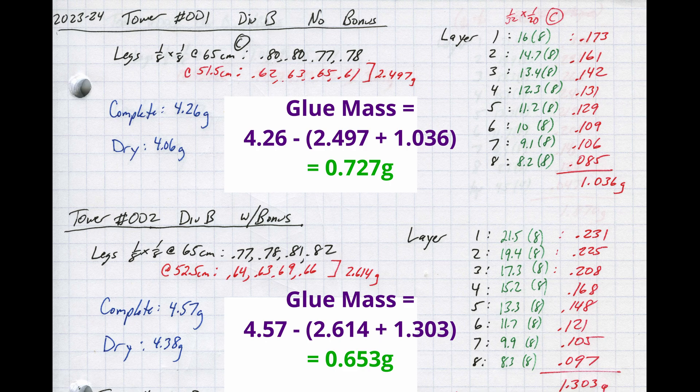For these builds, it was around 0.7 grams. One of the benefits of building the tower horizontally was to reduce the glue mass to under 0.5 grams as you'll see in future builds.